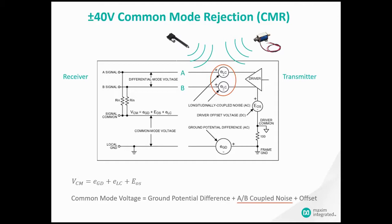This can also occur in the ground path between two grounds. This arises when a signal radiated by other devices or an AC power line induces currents in the ground path between the two devices, causing a voltage difference. The common mode voltage is the sum of these plus the driver offset.